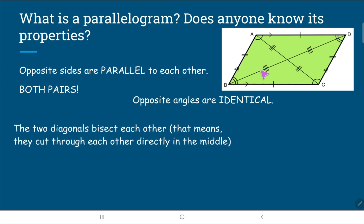Thirdly, they have two diagonals and they bisect each other. The word bisect means that they cut through each other directly in the middle point of each other. Another thing to note is that the opposite sides are parallel to each other.